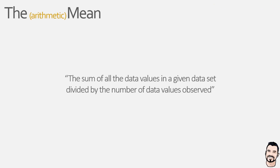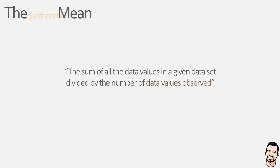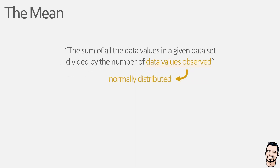Well, it is a statistical value that we use to help describe a specific aspect of a data set. In this instance, the mean value relates to the average value of a defined data set, and it is one of the most common ways to measure the midpoint of a number of data values — that is, when they are normally distributed.